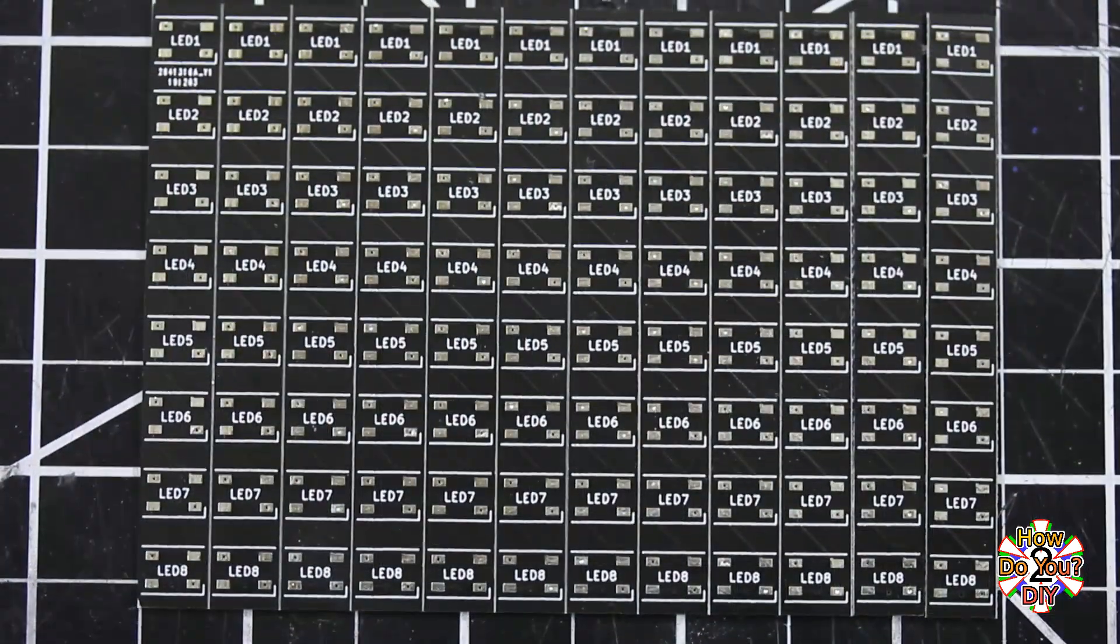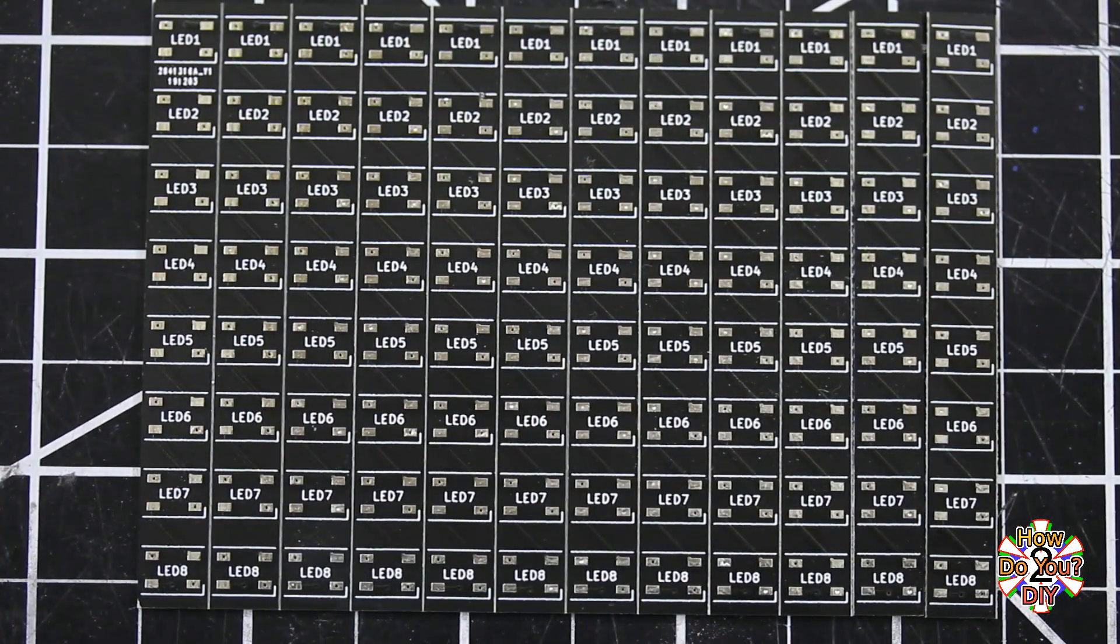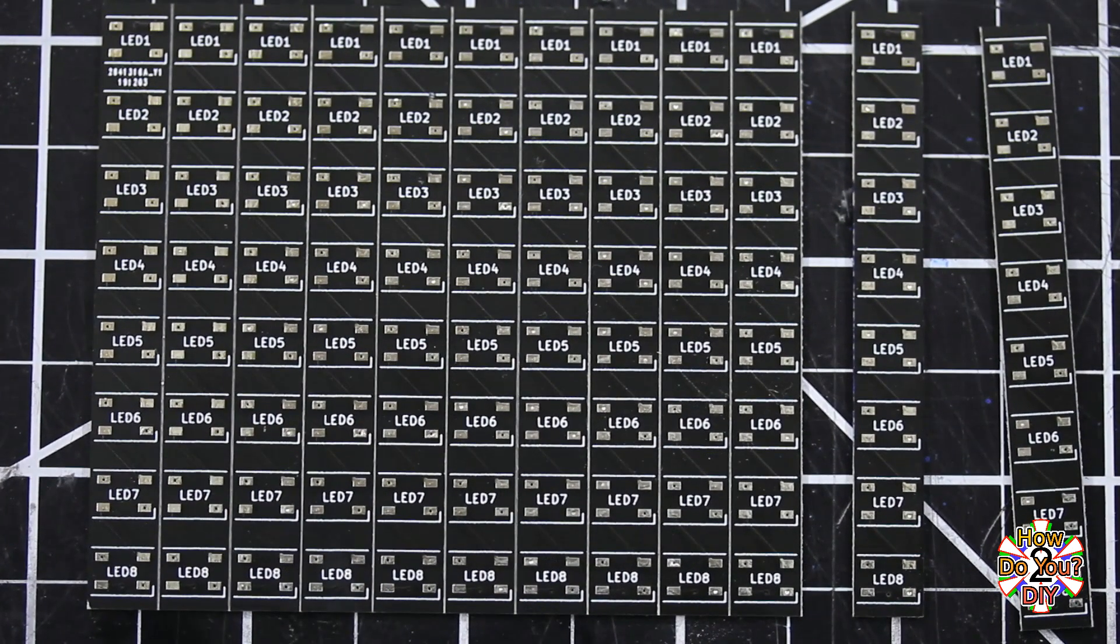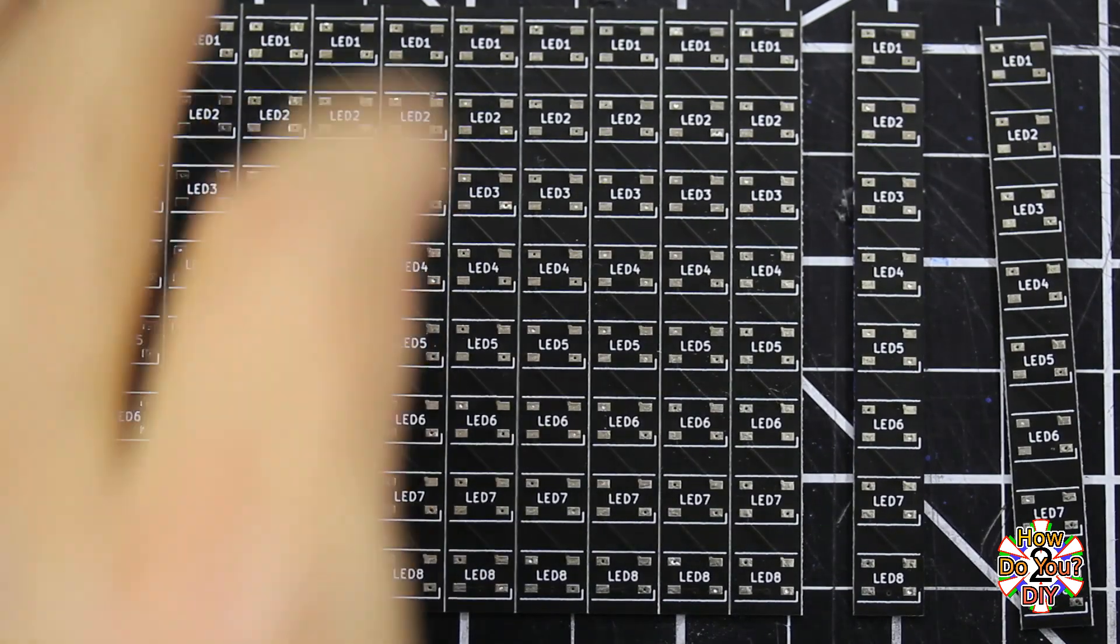I had them made in a panel of 12 boards, since the cube needed 12 strips. This panel can be easily separated into individual boards. The spacing of the LEDs is kind of arbitrary. I wanted to have 8 LEDs per strip, but within about 3 inches.